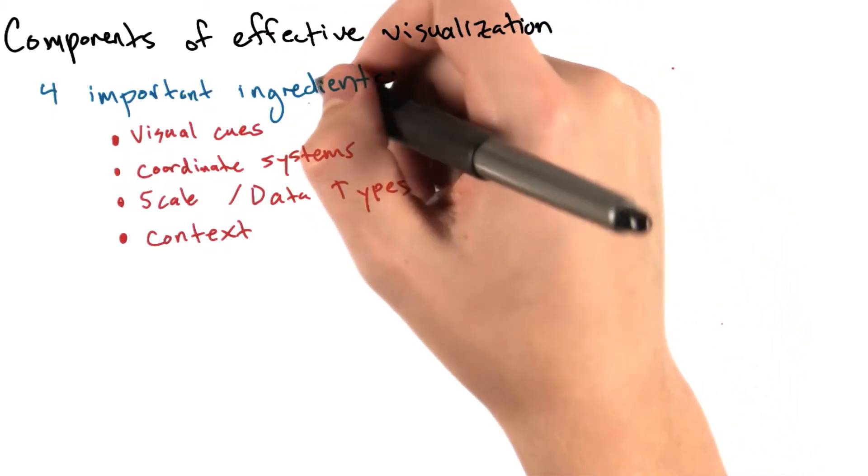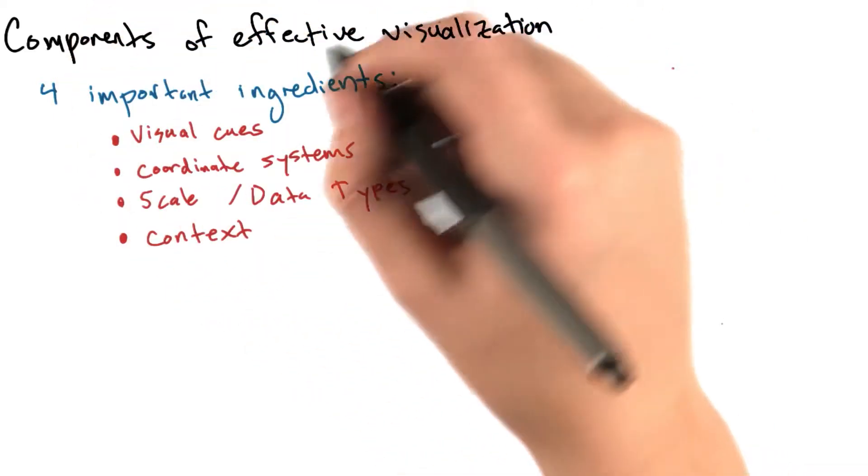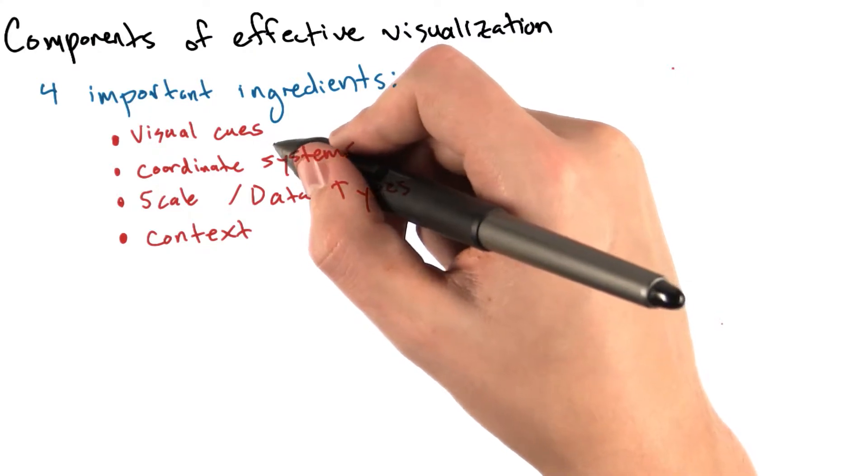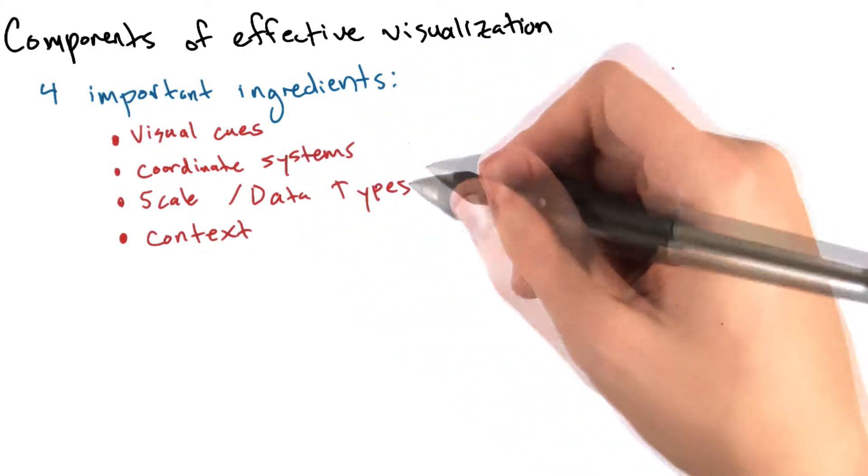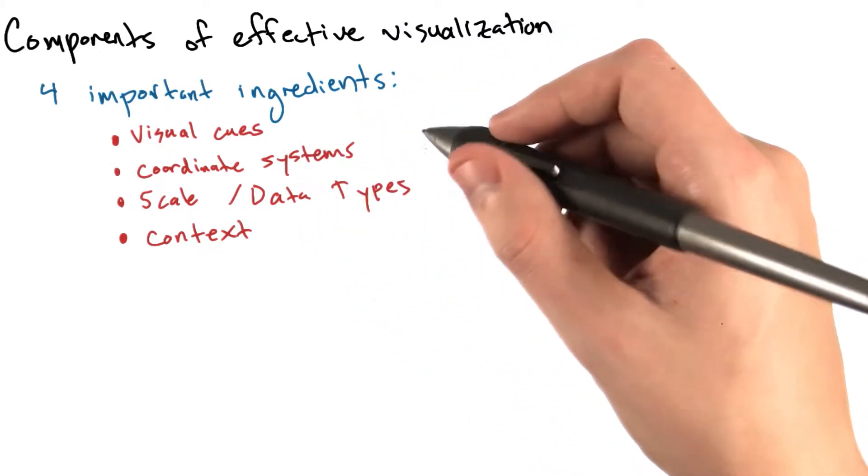Generally speaking, there are four important ingredients to any information visualization: visual cues, coordinate systems, scale and data types, and context.